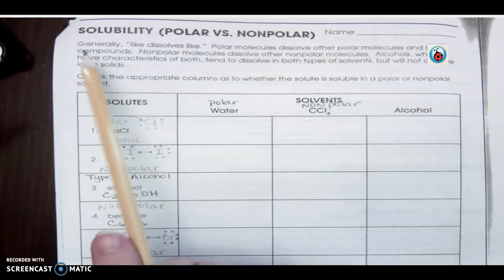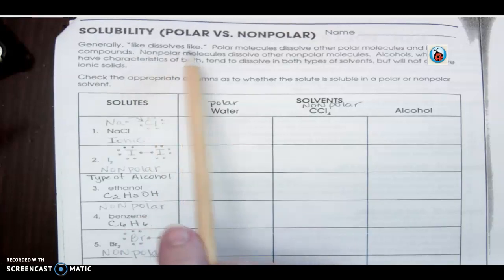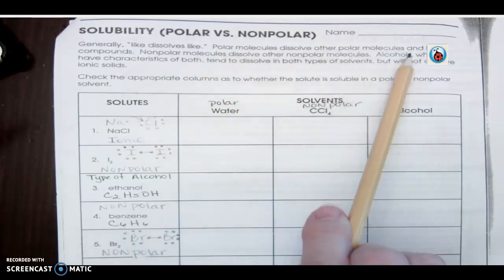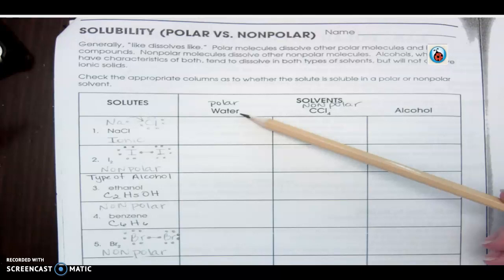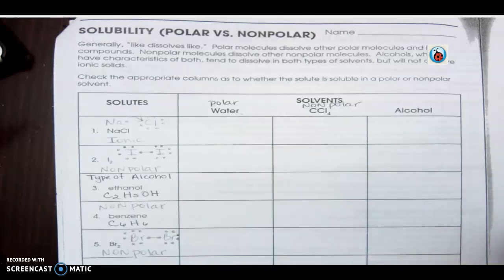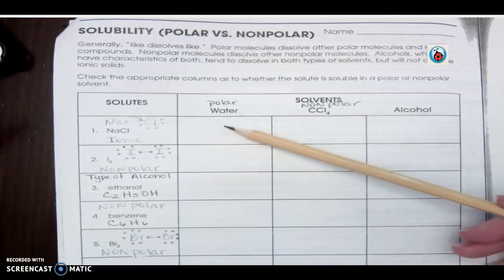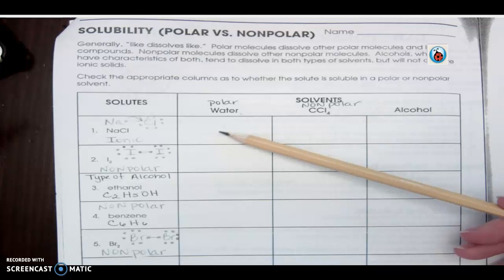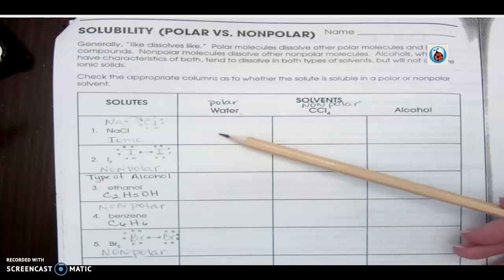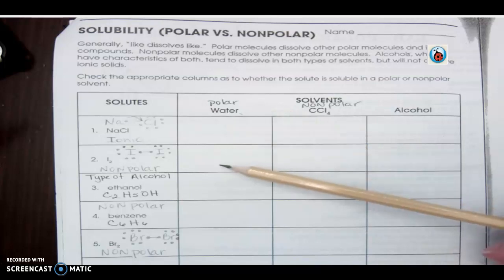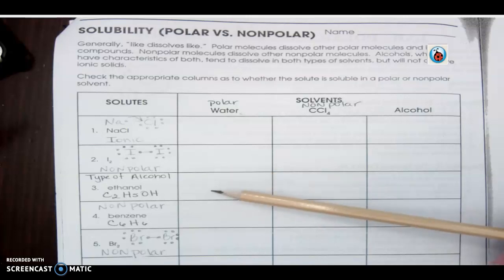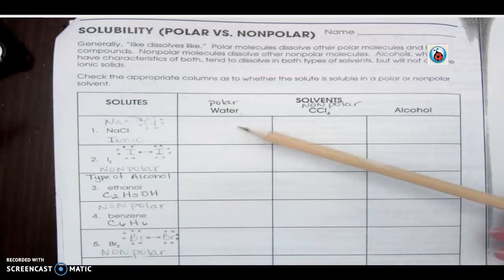Let's read the directions together: like dissolves like — polar molecules dissolve other polar molecules and ionic compounds. Water is polar, so we're deciding if these items will dissolve in polar water. Polar dissolves ionic, so water will dissolve ionic salt — check mark. It will not dissolve nonpolar iodine — no check mark. Put check marks down the column for the ones that dissolve in water.